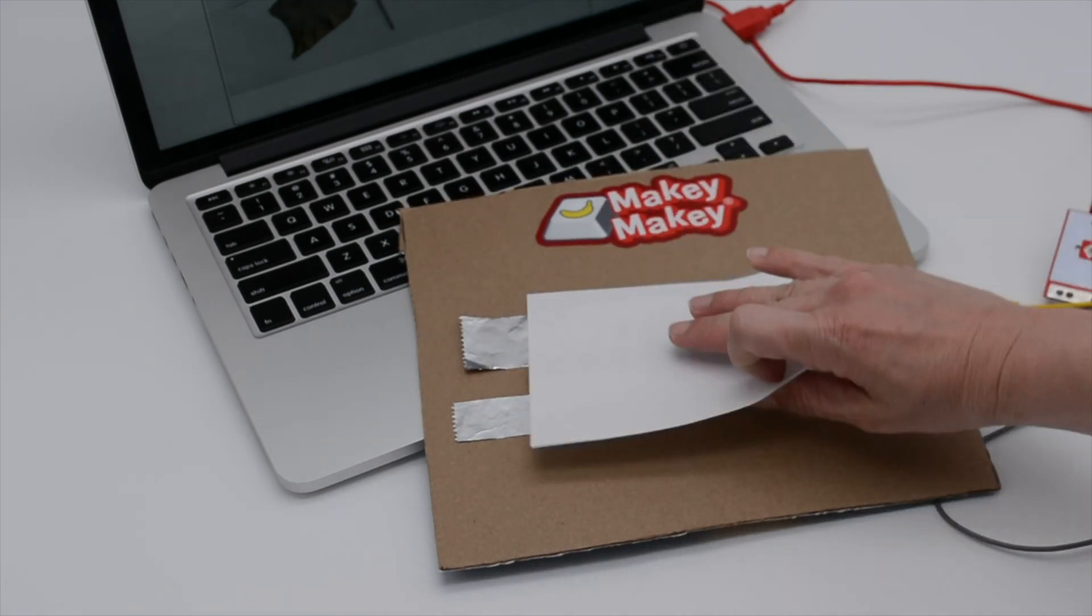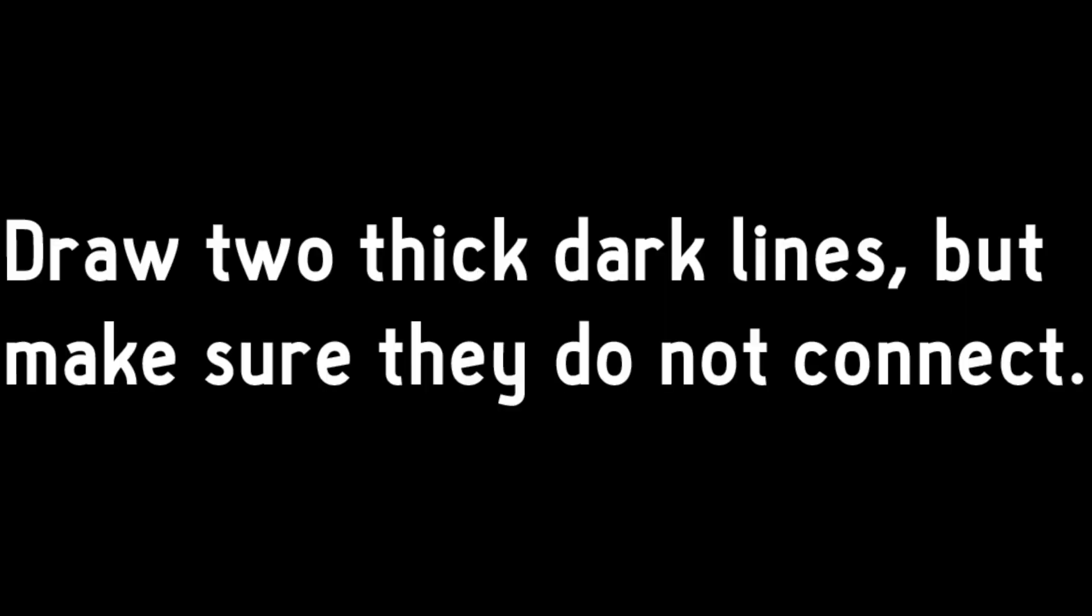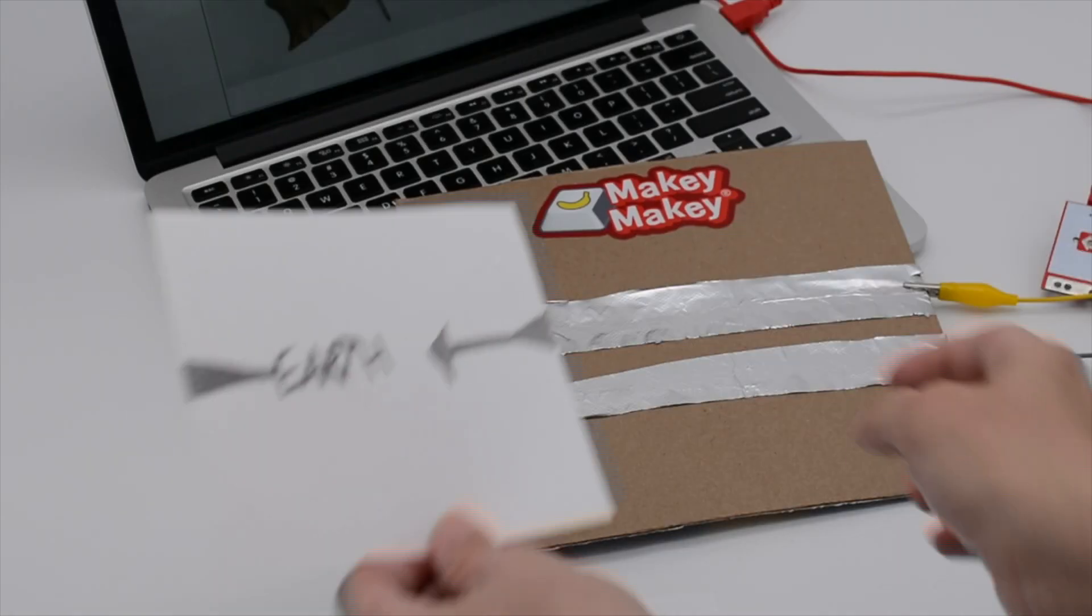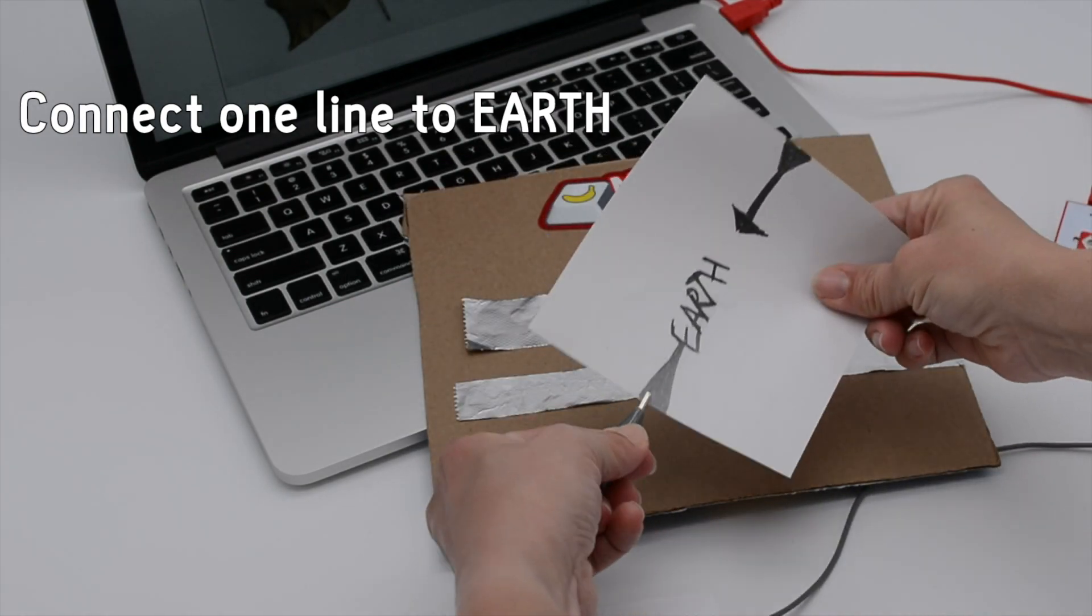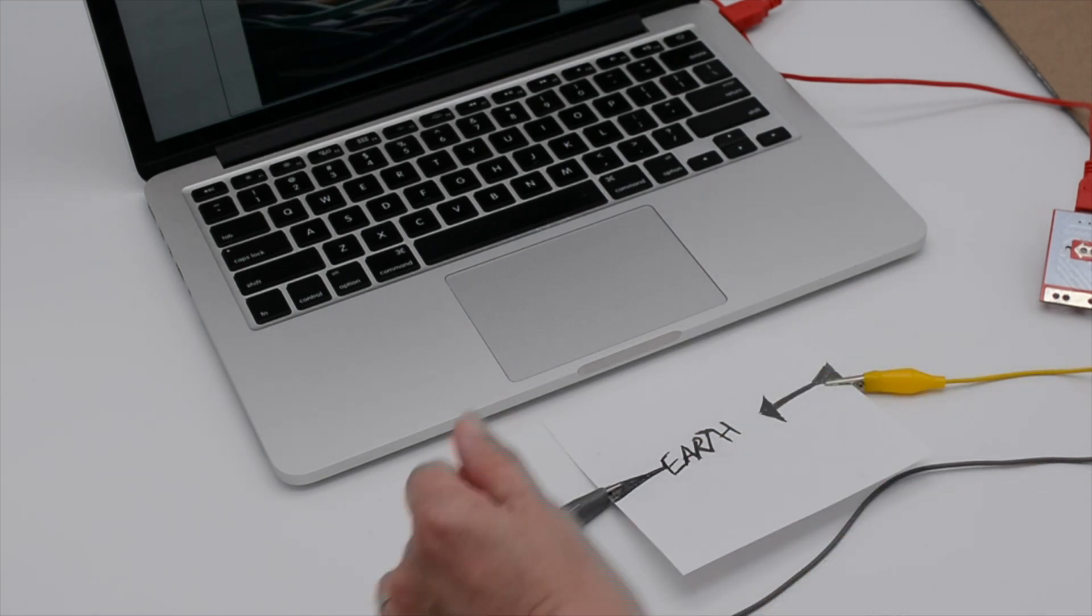Notice the paper side is an insulator. Now let's try another experiment. Draw two thick, dark lines on a piece of paper and make sure they don't connect. Now we're going to alligator clip to your drawing. Take one to Earth and one of your clips from space onto the other line of your drawing. Test it.